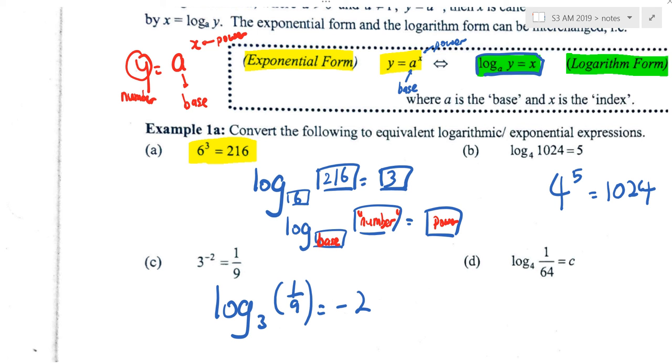Now can you do the next one? If I want to say log 4, 1 over 64 is equal to C. Nigel, which one is the base? 4. Eretina, which one is the power? C. So can you write down for me? 4 to the power of C. Singhui, 4 to the power of C is equal to what? 1 over 64. You can simplify, you can solve for C. But that's not what the question wants here. So let's stop here. Later, can you solve for C? Yes, you can continue.